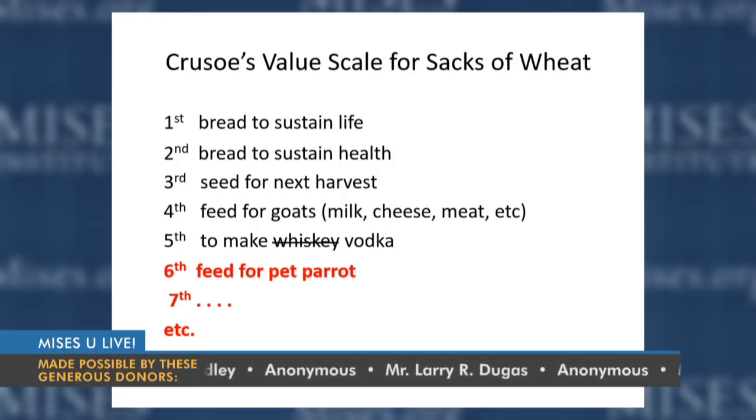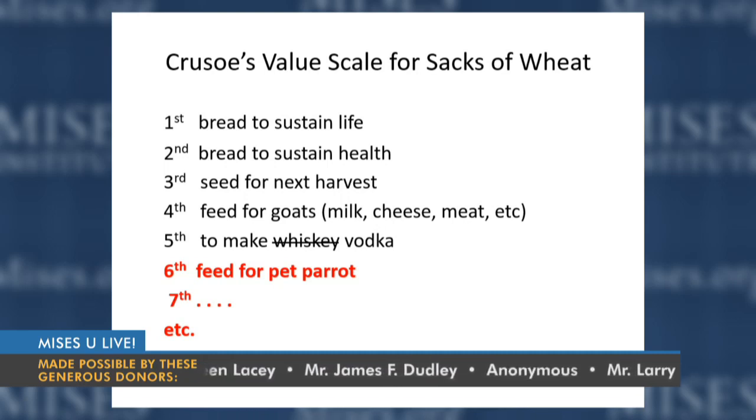As supply decreases, marginal utility rises. With three bushels of wheat, losing one means losing seed for the next harvest — much more valuable than goat feed. Modern example: a family with three drivers — dad the main breadwinner, mom who does errands and works part-time, and junior. If dad's car is lost, who gives up driving? Junior, because that's the lowest-ranked use in that family.